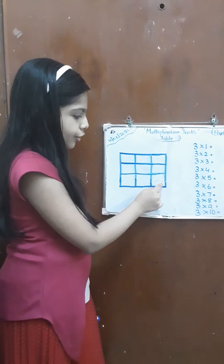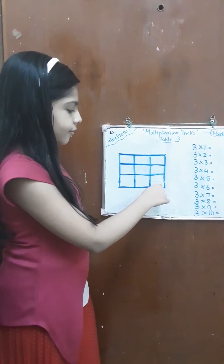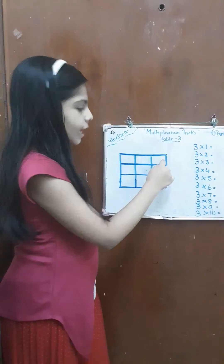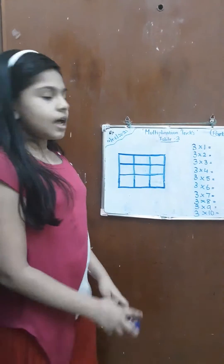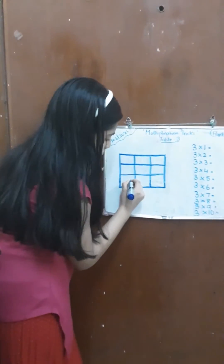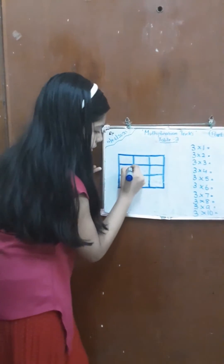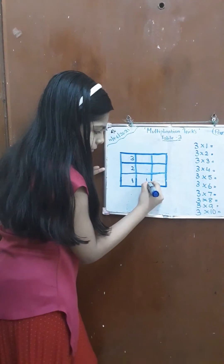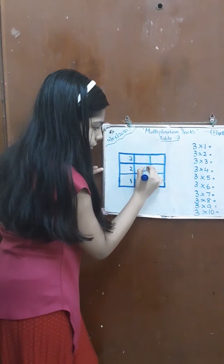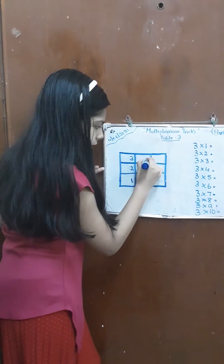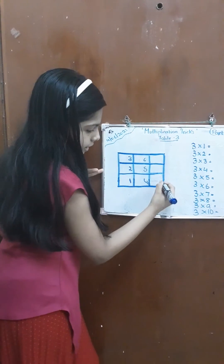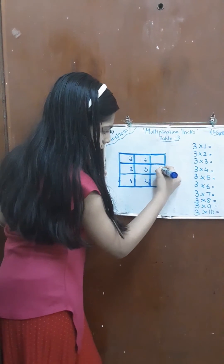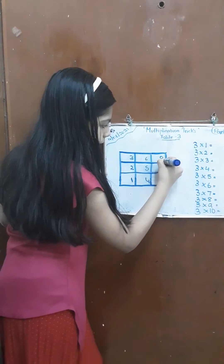Again we are going to go to the next down column and we are going to write 7, 8, 9. Now let's write 1, 2, 3. Now here 4, 5, 6. Again down 7, 8, 9.